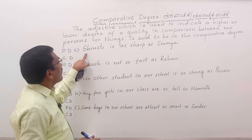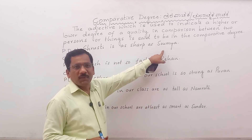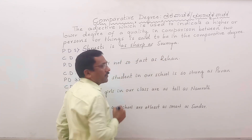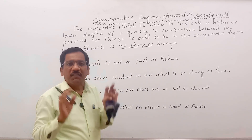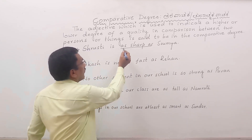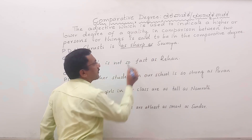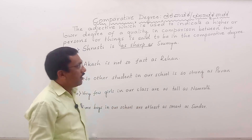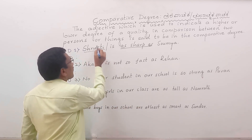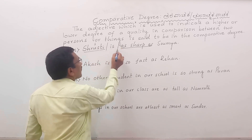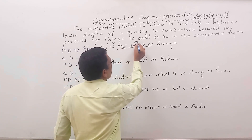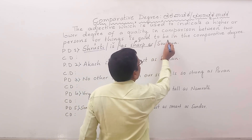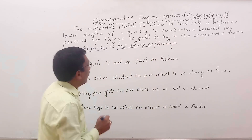First of all, consider the sentence: Srasti is as sharp as Somya. Here we have to look at the adjective part in order to know the kind of degree. If the adjective part consists of 'as...as', it is an indication of positive degree. Here, Srasti is the subject, 'is' is the verb, 'as sharp as' is the adjective part, and Somya is the object.